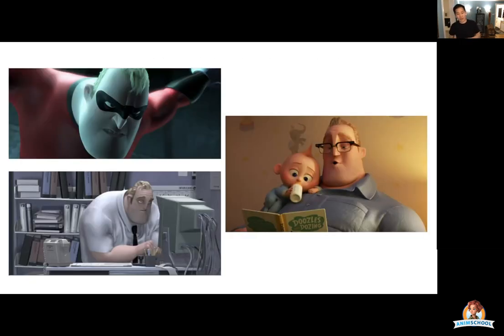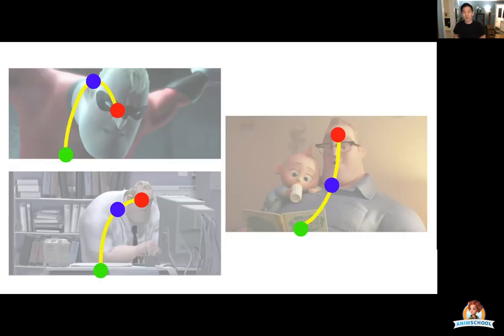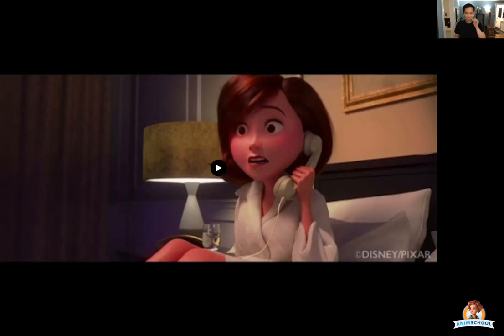That doesn't just apply to full body poses. Everyone's familiar with Mr. Incredible — you can see you can apply those same top, middle, and bottom principles to each one of these poses, and you can see how there are three very distinct emotions and three very distinct lines of action. Speaking of Mr. Incredible, let's watch an animated clip from Incredibles 2. Count how many poses are actually in this series of shots for Mr. Incredible.